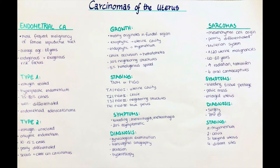In T1 or FIGO 1, tumor growth is restricted to the uterine corpus. In T2 or FIGO 2, the tumor infiltrates the cervix. In T3 or FIGO 3, it has spread to neighboring structures. In T4 or FIGO 4, the tumor has spread beyond the true pelvis and affects adjacent organs such as the intestines and urinary bladder.